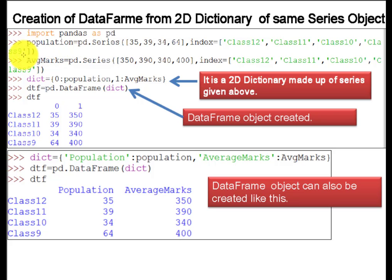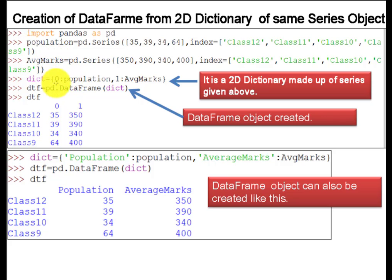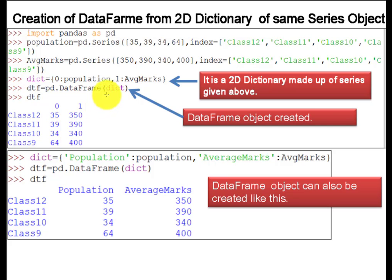Now students, you have two series for population and average marks. Now, this population and average marks will be converted into the dictionary form. How can you convert this series into a dictionary? Simply you will first assign the value — 0 for population and 1 for average marks — and this dictionary has been created. Now this dictionary can be converted into a DataFrame.